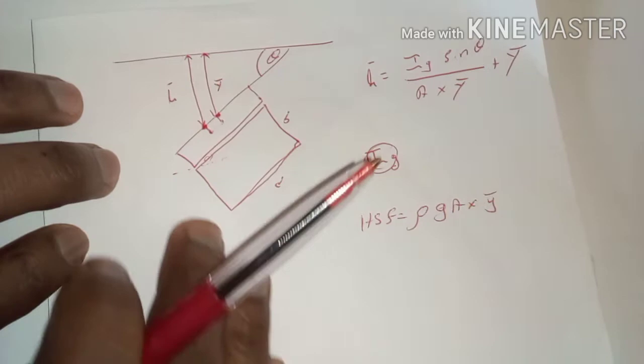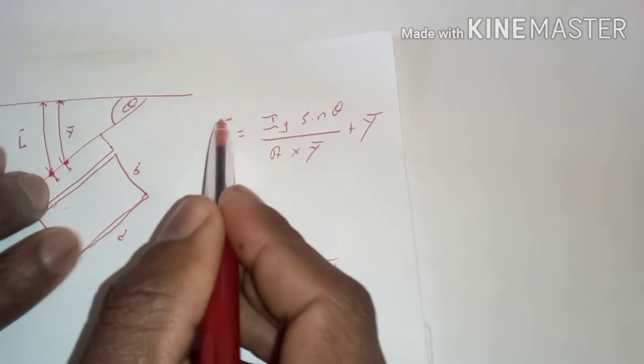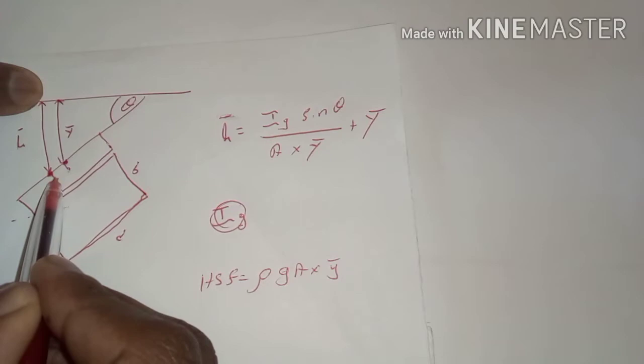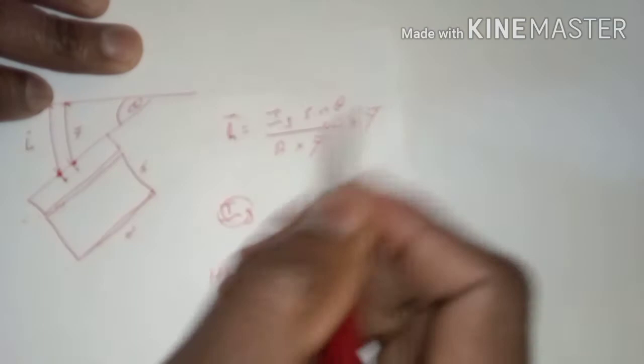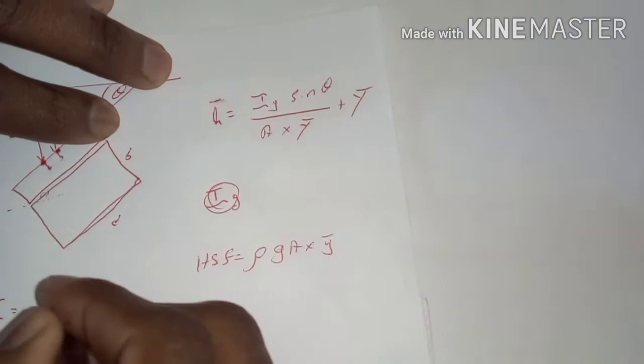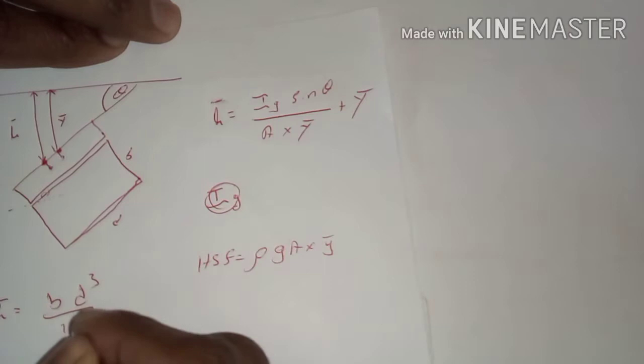So now the value to calculate our h-bar — which is the distance from the center of pressure to the surface of the water — is given by: moment of inertia times sine squared theta, divided by area times y-bar, all plus y-bar. And the moment of inertia is given by pd³ divided by 12.